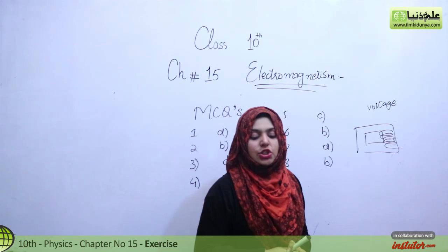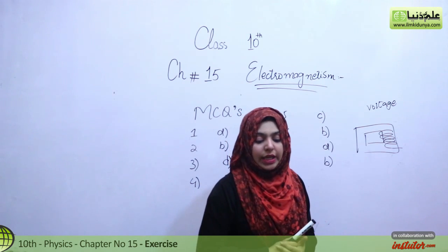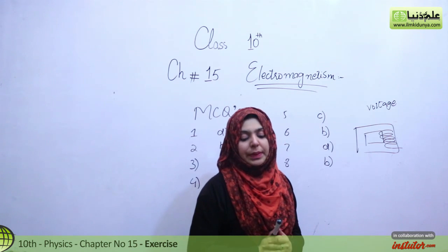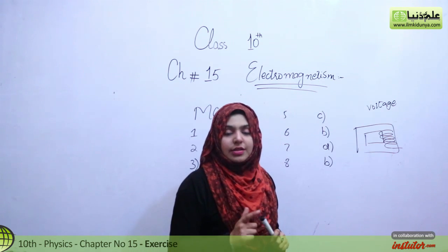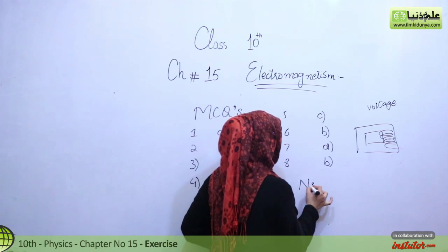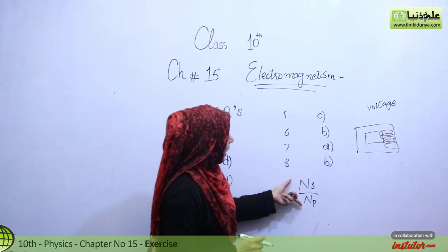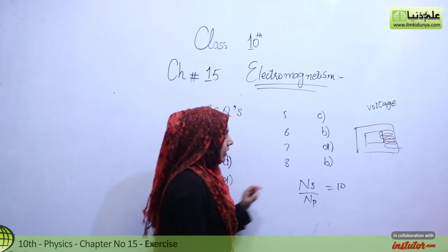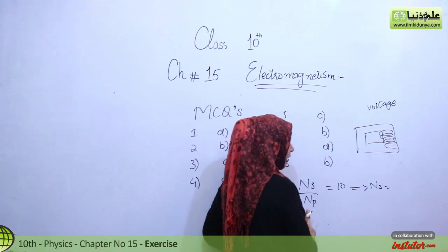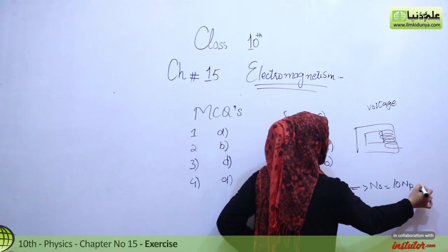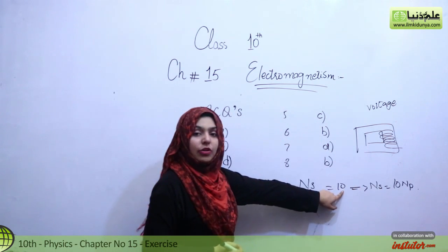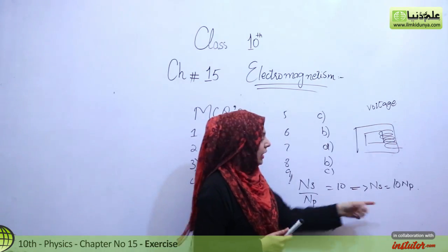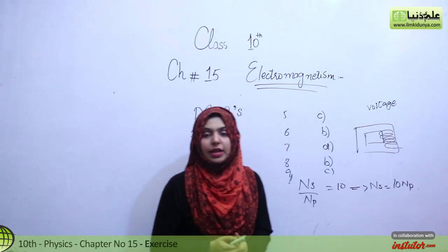Number 9 is: the turn ratio of a transformer is 10 — it means: number A IS = 10 IP, number B NS = NP over 10, number C NS = 10 NP, and number D VS = VP over 10. The turns ratio is defined as NS over NP. If the turns ratio equals 10, then rearranging gives NS = 10 NP. So our option C is the right option, meaning NS is equal to 10 NP.